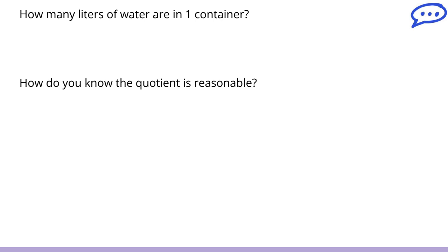This question is getting me to think about my answer. How many liters of water are in one container? When I did my division in my vertical form, I found that each container had 2 and 3 fourths liters in them. How do you know that the quotient is reasonable? Well, I know that it's reasonable if I would do 2 liters times 4 containers. That would give me at least 8, so I know it has to be a little bit more than that. If I did 3 liters in every container, 3 times 4 would give me more than what I started with. 3 times 4 is 12. Remember, we only started with 11 liters. 11 divided by 4 has to be less than 3.